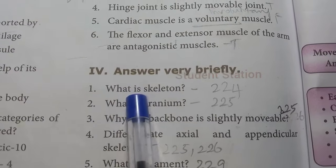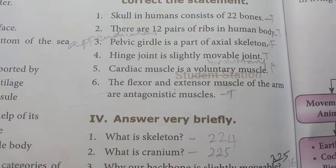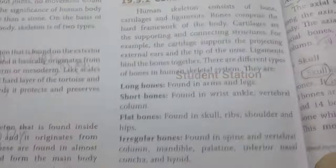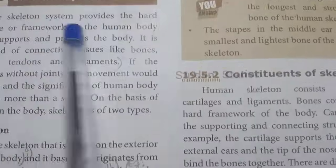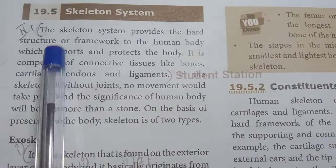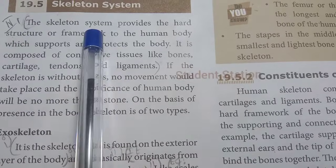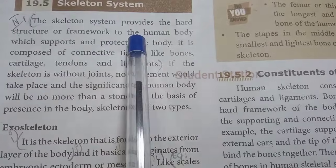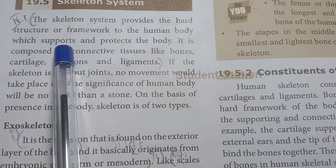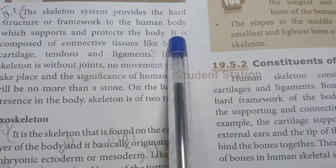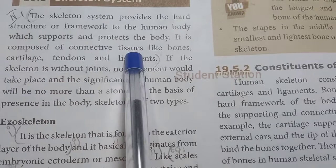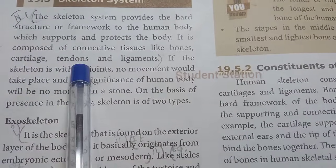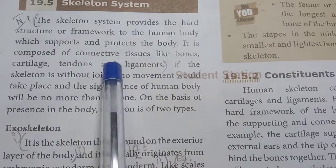First question: What is skeleton? The answer is on page 224, under the skeleton system heading. The skeletal system provides the hard structure or framework to the human body, which supports and protects the body. It is composed of connective tissues like bones, cartilage, tendons, and ligaments. Two points are written.